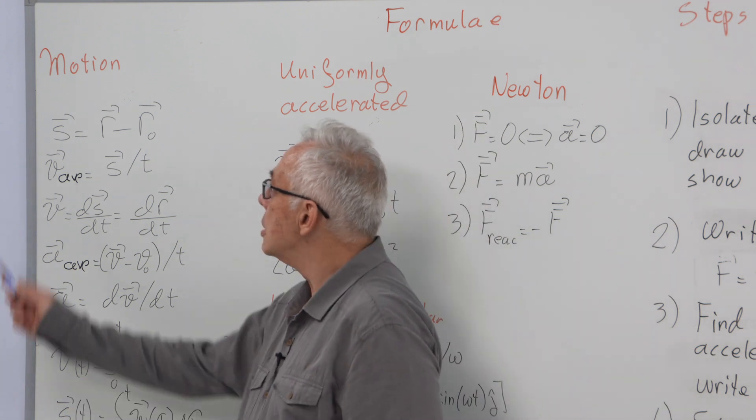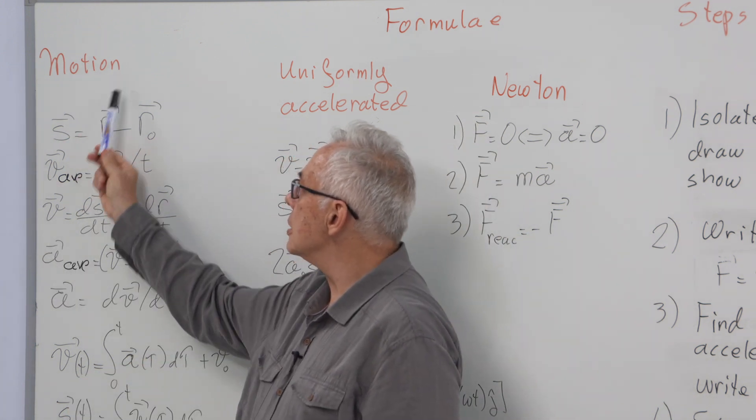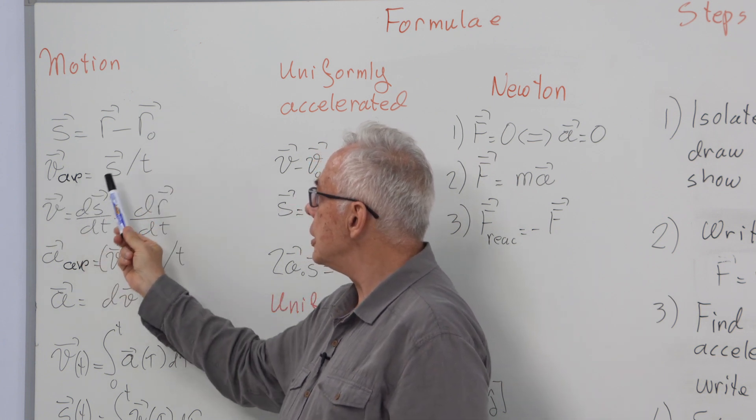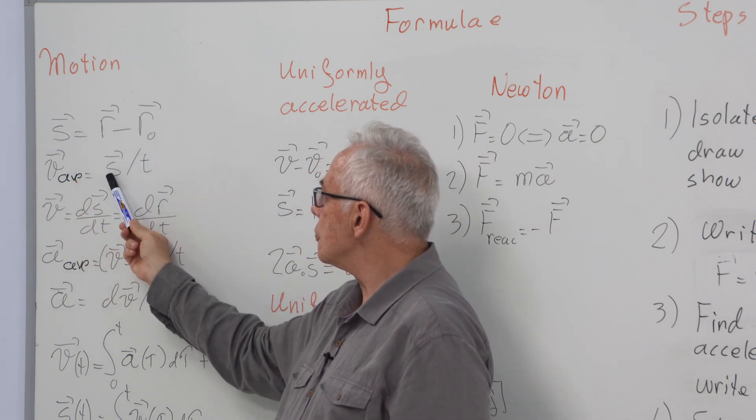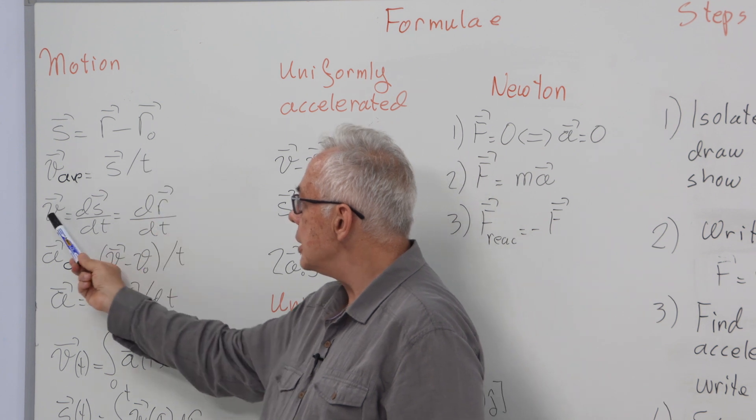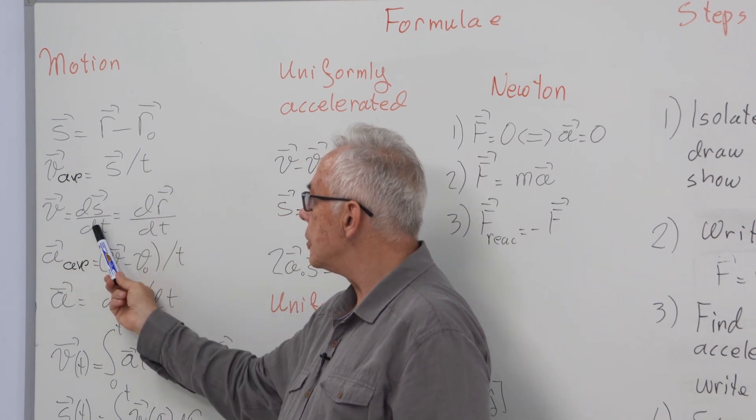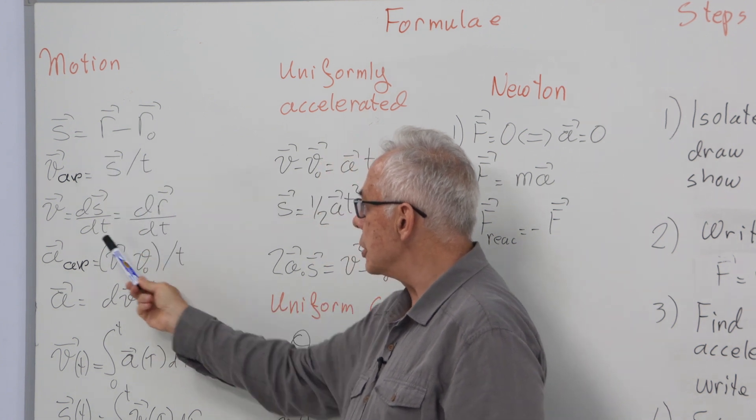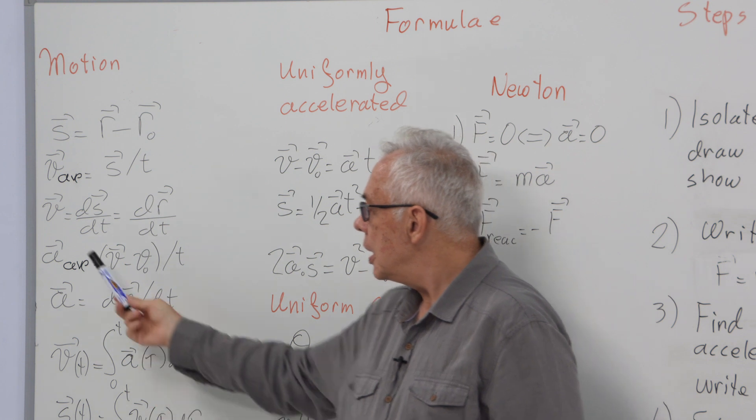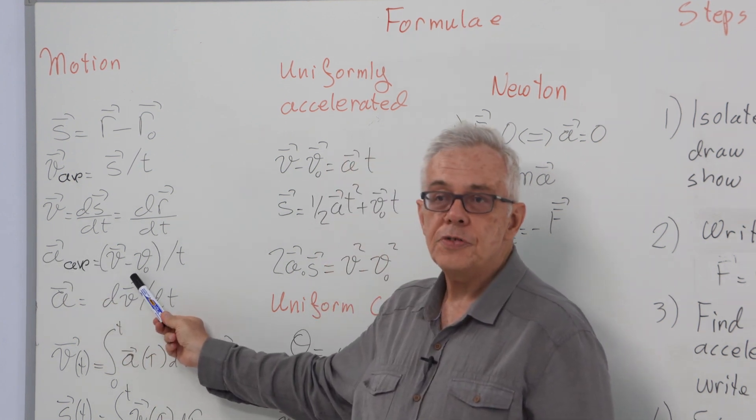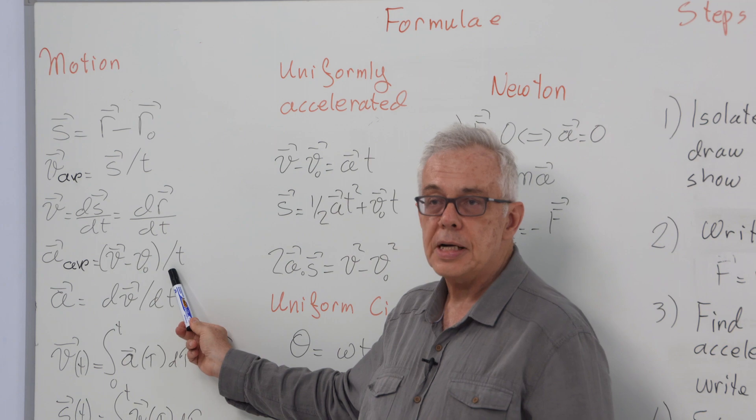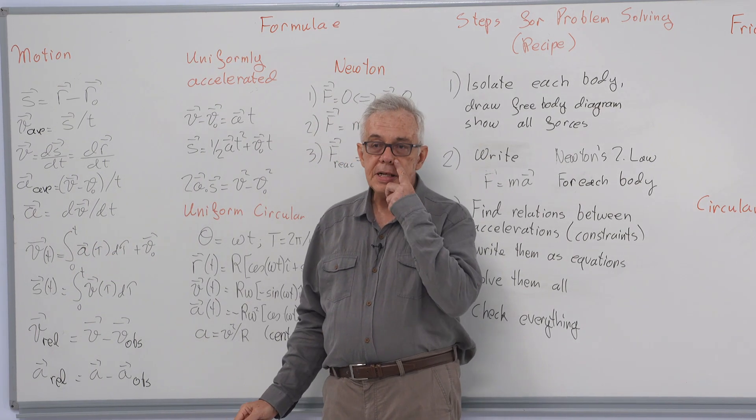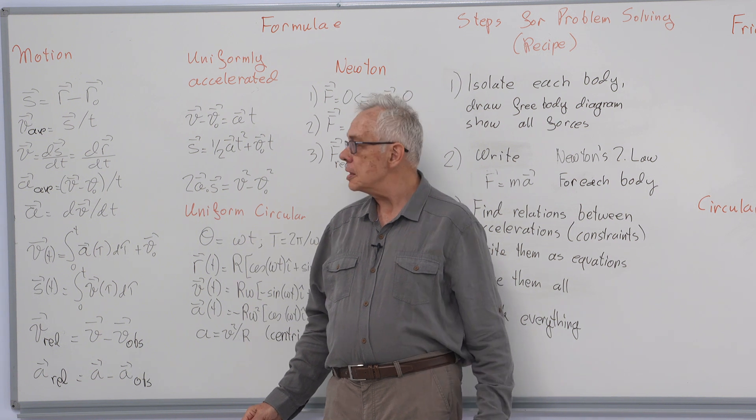Let's remember we investigated motion. Displacement is change in position. Average velocity is the ratio of displacement to time. Instantaneous velocity is the derivative of displacement or position with respect to time. Average acceleration is the ratio of change in velocity to time, and instantaneous acceleration is the derivative of velocity with respect to time.